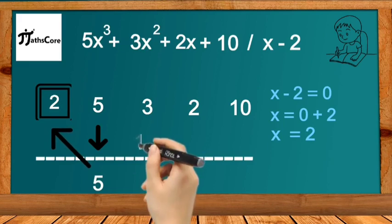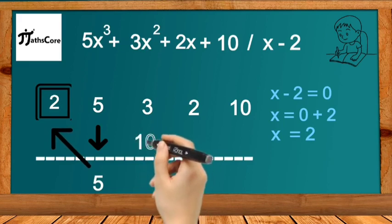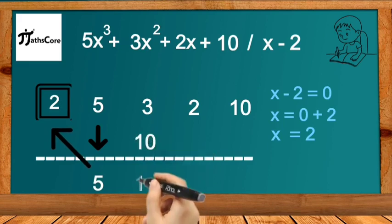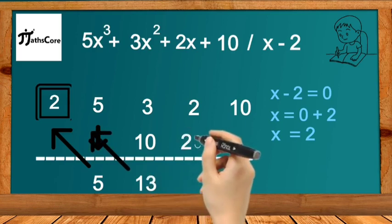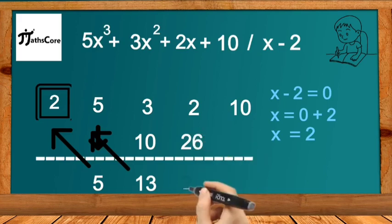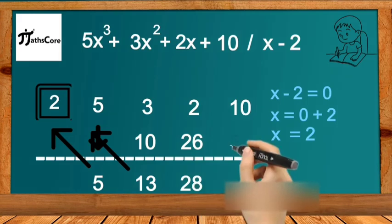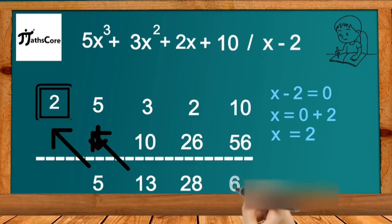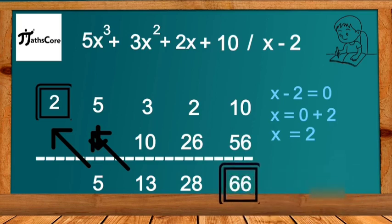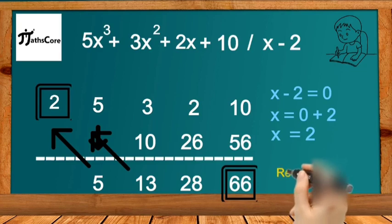Add this 10 to the next number 3: 10 + 3 = 13. Multiply 13 with 2: 13 × 2 = 26. Add 26 to 2: 26 + 2 = 28. Multiply 28 with 2 and we get 56. Add 56 to the last number 10, and we get 66. So 66 is the remainder.